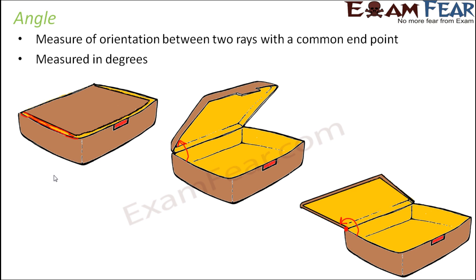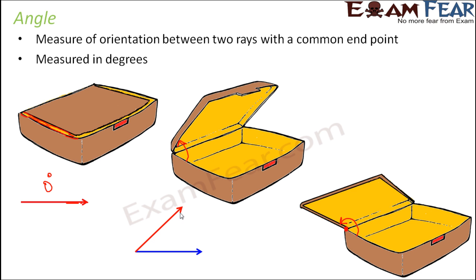We measured this angle in degrees — like 0 degree, 10 degree, 20 degree, 180 degree, and so on. In the first case the angle was 0, so this was the orientation of the base and this was also the orientation of the lid, so the angle between them was 0 — we call it 0 degree. In the second case, if the blue ray represents the base, then the red ray represents the lid, so there was some angle — let's say this angle was 60 degree.